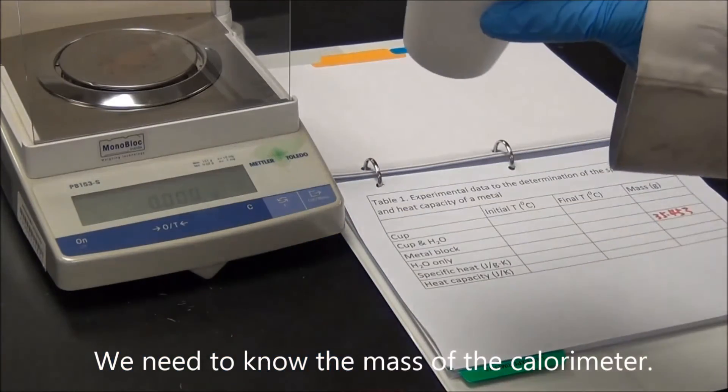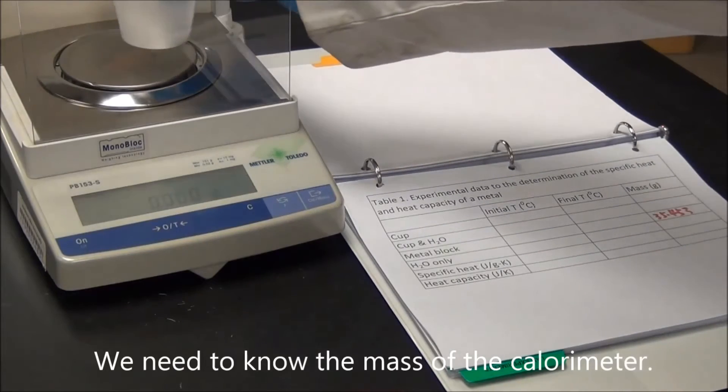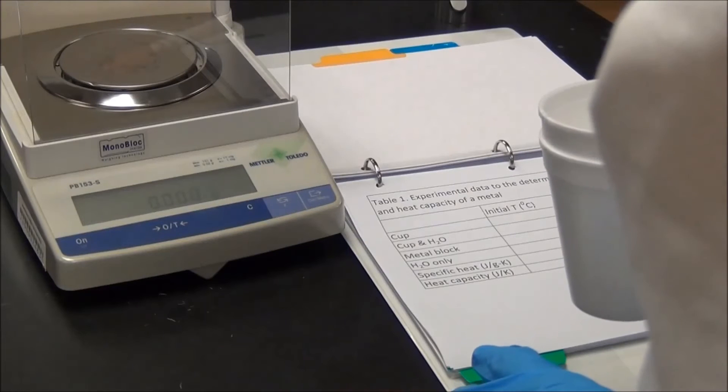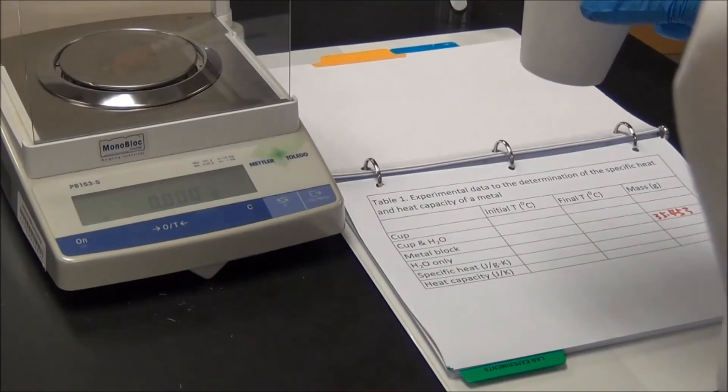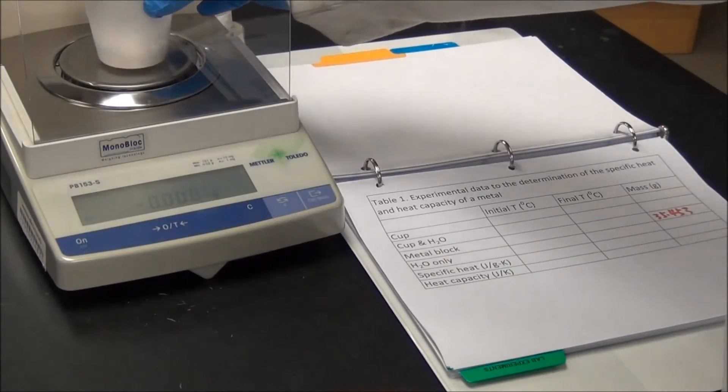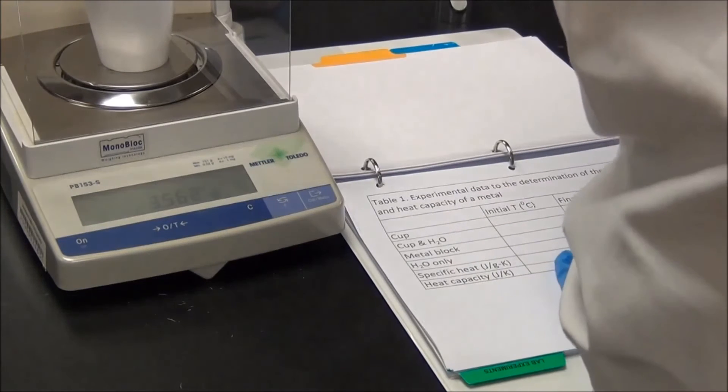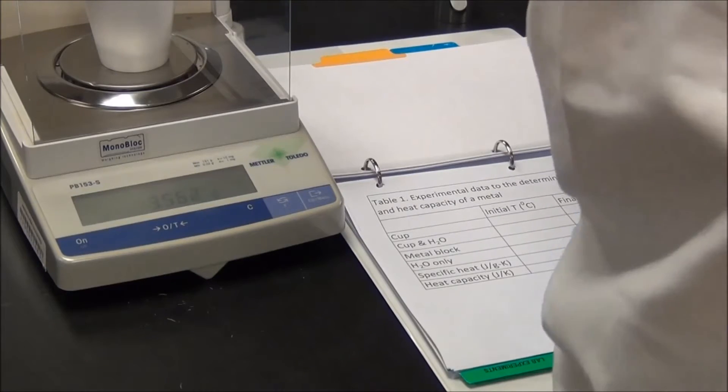For this mini lab, we also need to measure the mass of the calorimeter. Let's make sure the reading is zero before we place the cup on top of the balance. And then the mass of the cup is 3.562 grams.